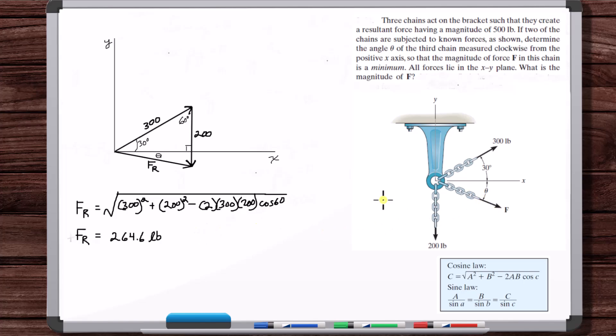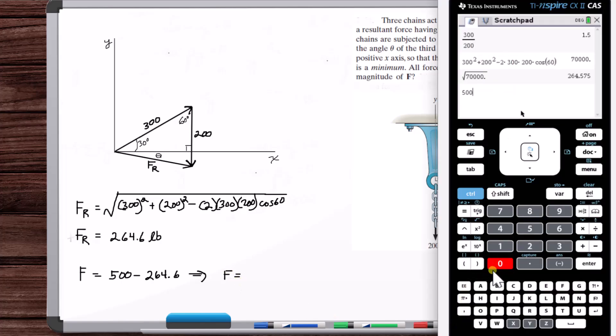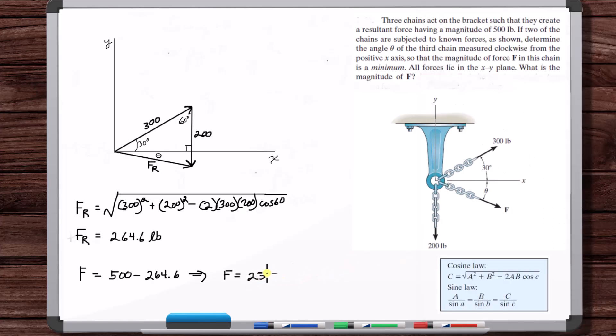That's not F. We know that F is going to be 500 minus this because F is going to be in this direction. You just apply F directly to this, so it just adds. It's a straight addition. F is going to be 500 minus 264.6, so F equals 235.4 pounds.